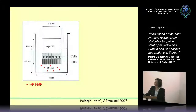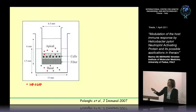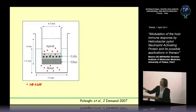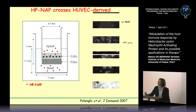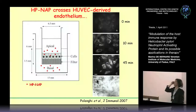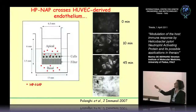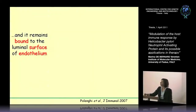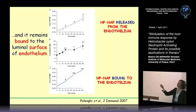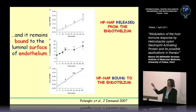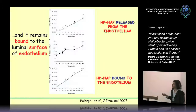We evaluated after different time points the presence of H. pNAP inside the endothelium, and also whether H. pNAP was released in a soluble form in the apical chamber. H. pNAP is rapidly internalized by endothelial cells, and the intensity of fluorescence increases with time. More interestingly, not only we found that H. pNAP is released in the lumen in a soluble form, but it also remained bound to the apical surface of the endothelium.